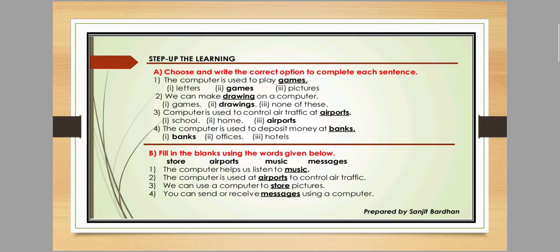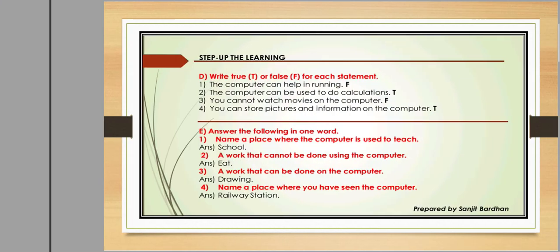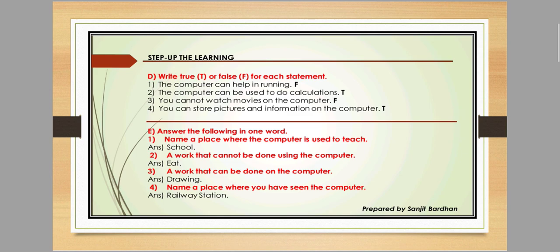Next are fill in the blanks. Note that fill in the blanks can also be converted into multiple choice questions. For example: the computer helps us listen to music, do drawing, play games, or do calculations. We can also use a computer to store pictures. We can send or receive messages using the computer. For true or false: 'The computer can help in running' — this is false. 'The computer can be used to do calculation' — true. 'You cannot watch movies on the computer' — false. 'You can store pictures and information on the computer' — true.